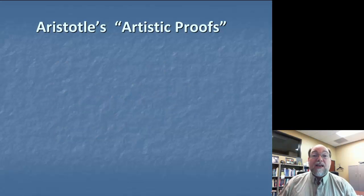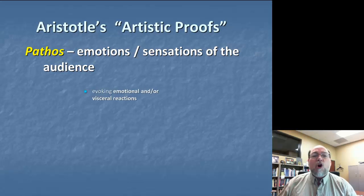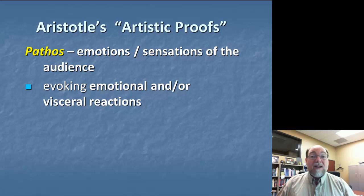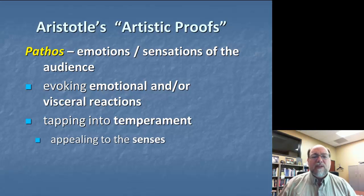Let's talk about that third proof of Aristotle's artistic proofs: pathos, or the emotions or sensations of the audience. This one's really easy to get a handle on. Aristotle talks about the importance of targeting the emotional and the visceral reactions of the audience. How is it that appeals in the ad make us feel? Not just psychologically, but perhaps even physically. How do appeals in the ad — be they really evocative language or images or music or sound — tap into our temperament, the way that we feel about things?